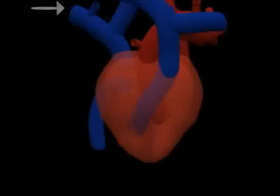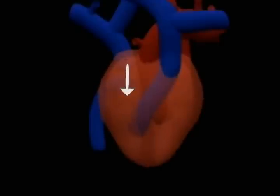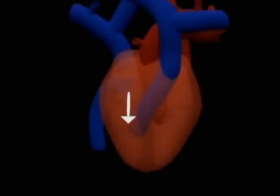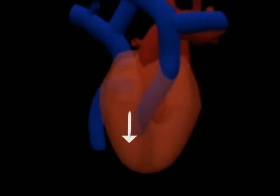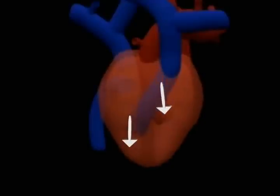Deoxygenated blood is brought into the heart through the superior and inferior vena cava. This impure blood is drawn into the right auricle, which on contraction passes it into the right ventricle. Simultaneously, the left auricle receives blood from the pulmonary vein and on contraction passes it into the left ventricle.